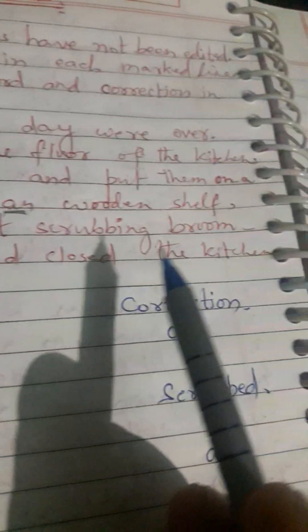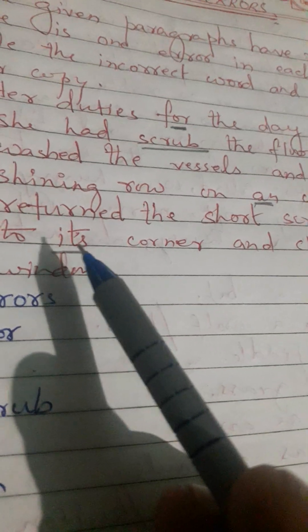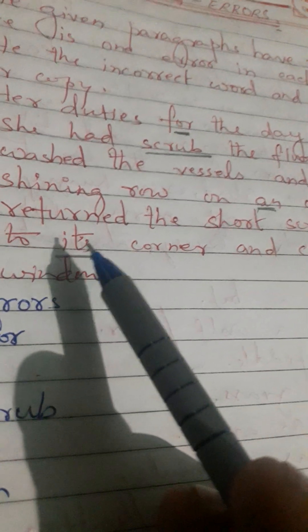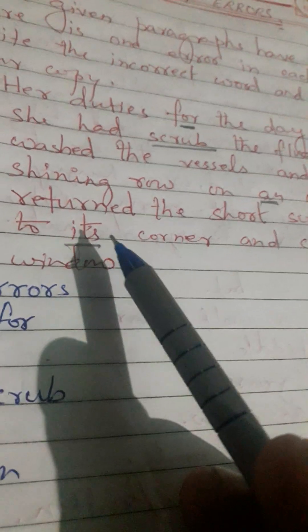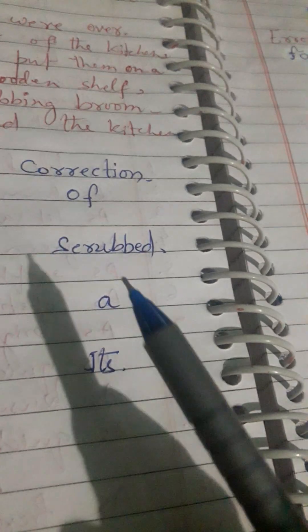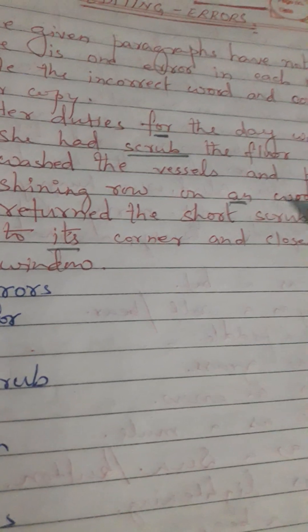Fourth error: 'Return the short scrubbing broom to it's corner and closed the kitchen window.' The word 'it's' is incorrect here — it should be 'its' (the possessive form, without an apostrophe). So replace 'it's' with 'its.' Write 'it's' in the column of error and 'its' in the column of correction. In this way, you have to answer the given paragraph in the editing errors format in your examinations.